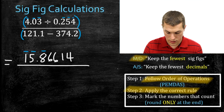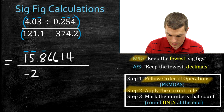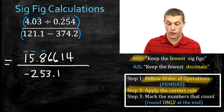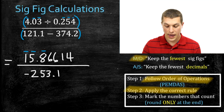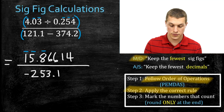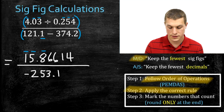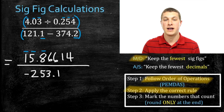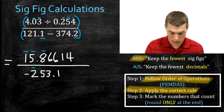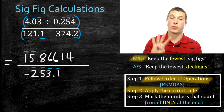Now I resolve what's on the bottom. When I do that subtraction problem, I get -253.1. That follows the order of operations — step one again. I apply the correct rule: I've subtracted, so I follow the addition-subtraction rule — keep the fewest number of decimals. Both numbers in that calculation had one number past the decimal, so my answer has 4 sig figs and 1 decimal.